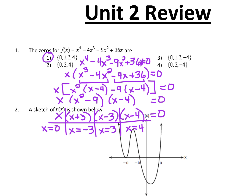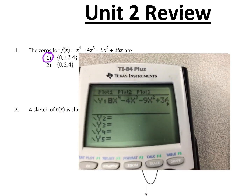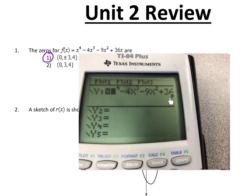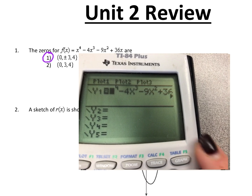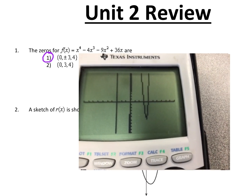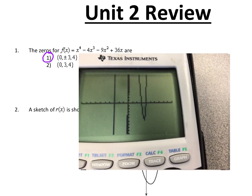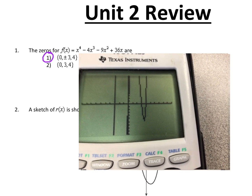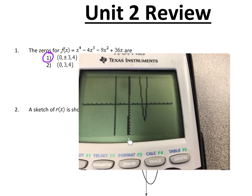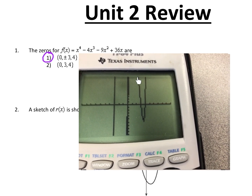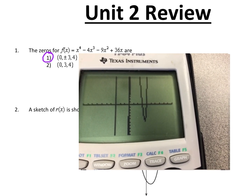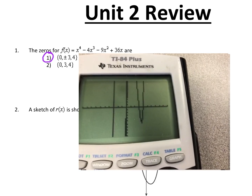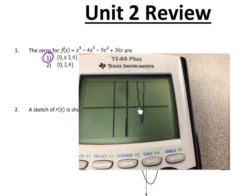Now I'm also going to show you how to do this graphically. So what I did was I went to y equals and plugged this into my calculator. Then I hit graph. The zeros are where the graph intersects the x-axis. So it looks like we're intersecting the x-axis at negative 3. It's hard to see this one, but the graph is coming down, going back up, so there actually is a point where it intersects. It's intersecting at 0, at positive 3, and positive 4.